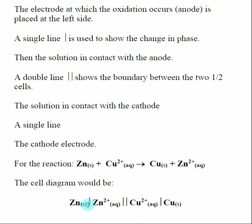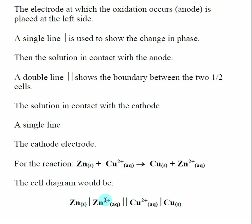In this case it's Cu²⁺, and then the cathode electrode itself — copper solid — is on the far right. This shows what is going on with the electrons: zinc goes to Zn²⁺ to produce electrons, and those electrons move to Cu²⁺ to form copper. A helpful way to remember it is that the metal on the left-hand side of the overall redox reaction goes on the left of the cell diagram, and the metal on the right of the arrow goes on the far right. Each metal is in contact with its corresponding ion solution.